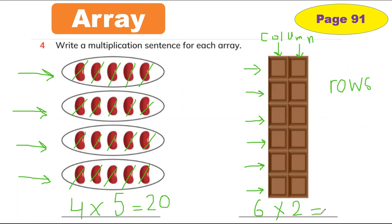Then equal. Let's count how many chunks of chocolate all together: one, two, three, four, five, six, seven, eight, nine, ten, eleven, and twelve. So we have six rows and two columns, which makes 12 chocolates.